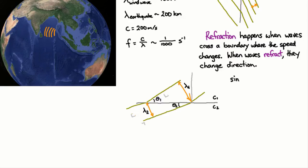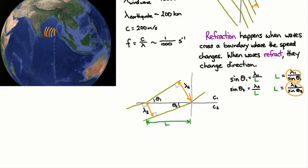So sine theta 1 is the first wavelength divided by this distance. Let's call that distance L. And similarly, sine of theta 2 is just going to be that length divided by that length, which is just lambda 2 divided by L. And if we rearrange for L, and obviously L equals L, therefore the right hand sides equal each other.